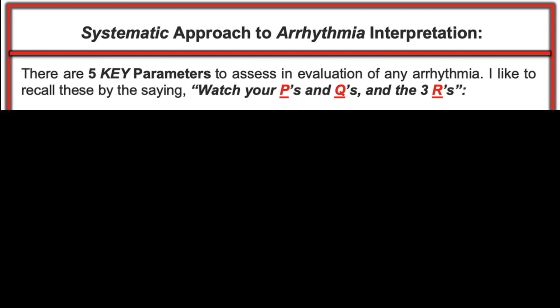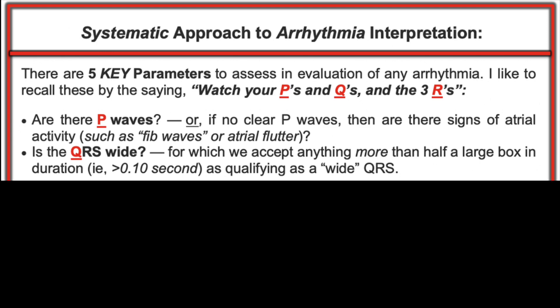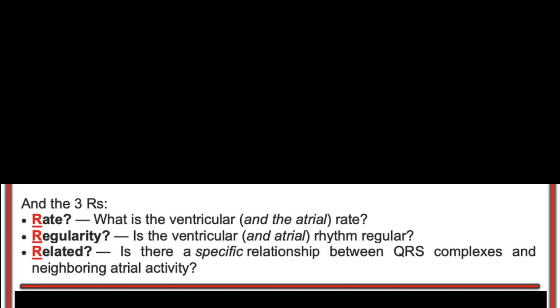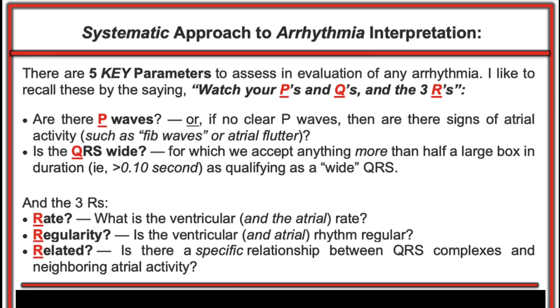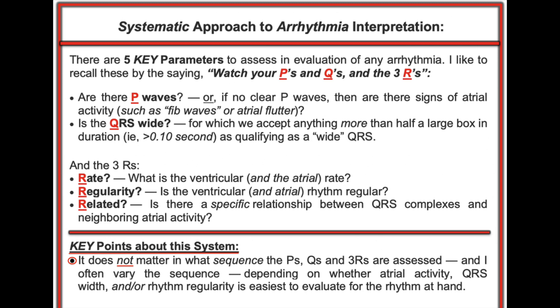These are the five parameters you want to use for any arrhythmia — fast rhythms, slow rhythms. Look for P waves or atrial activity, and ask: is the QRS wide or is it narrow? The three R's are the rate of the rhythm — this is both the atrial and ventricular rhythm — the regularity, and if there are P waves, are they related to the QRS complex? It does not matter in what sequence you ask these questions, as long as you always assess all five parameters.